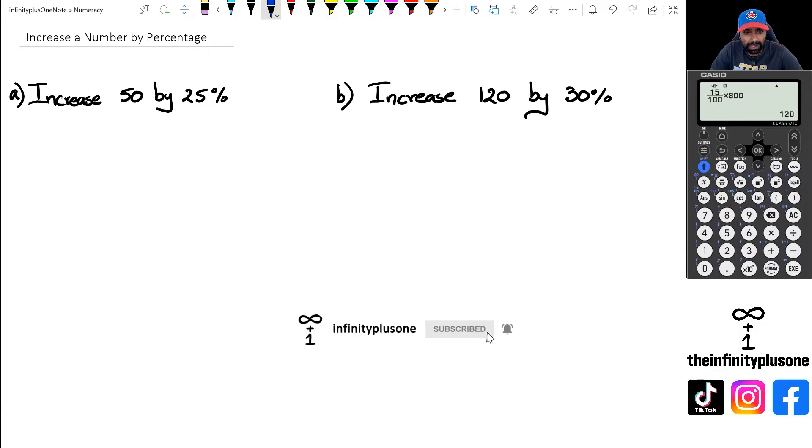We've got to increase 50 by 25%. The first thing we've got to figure out is what is 25% of 50. I'm actually going to slightly change the question - let's make it 60. So we want to increase 60 by 25%.